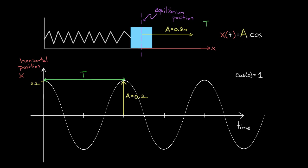So we'll just multiply the front of this by the amplitude—because then one times amplitude means that x only gets as big as the amplitude, which is exactly what I want.